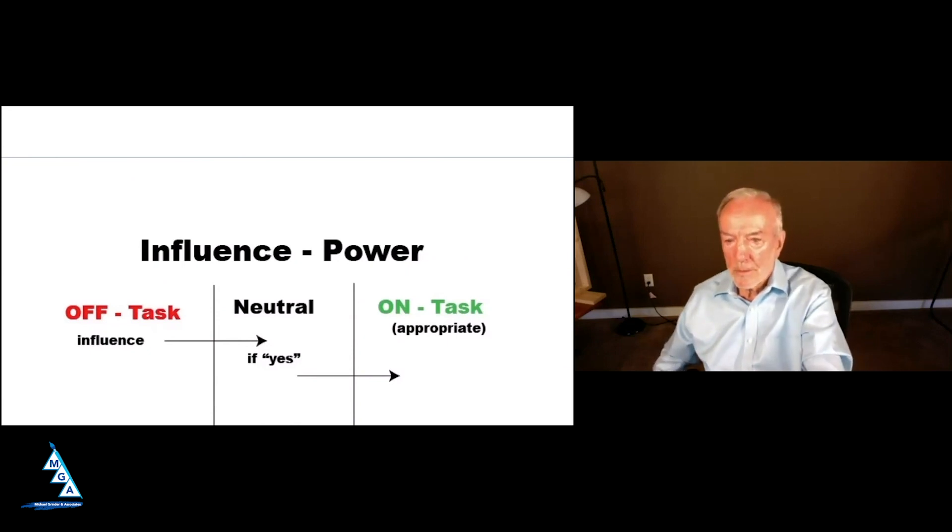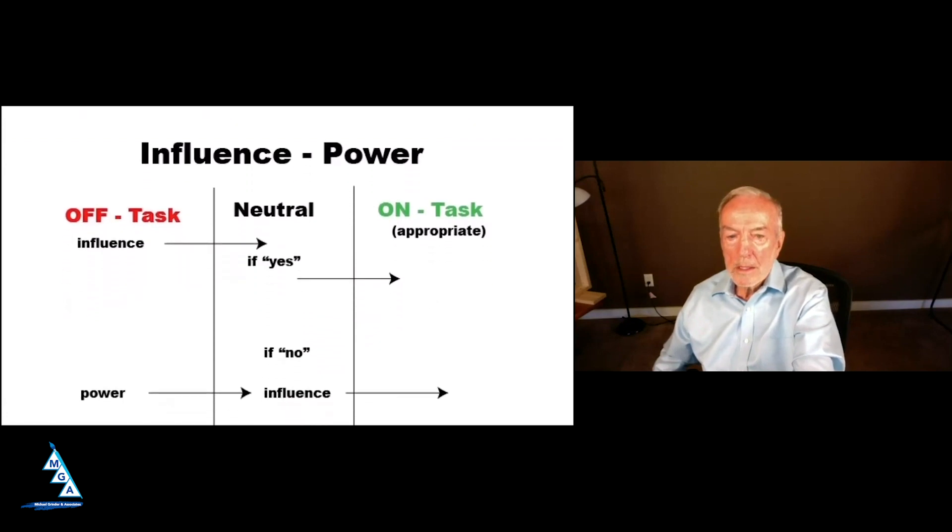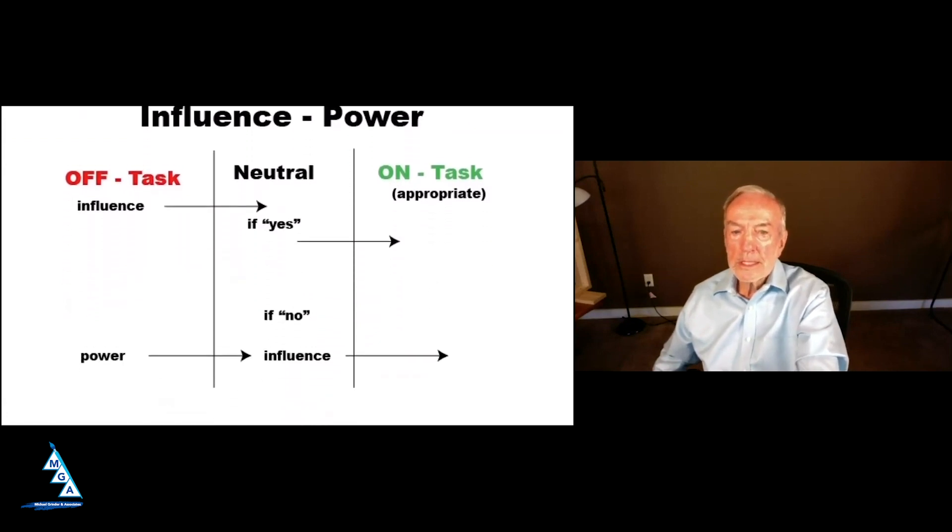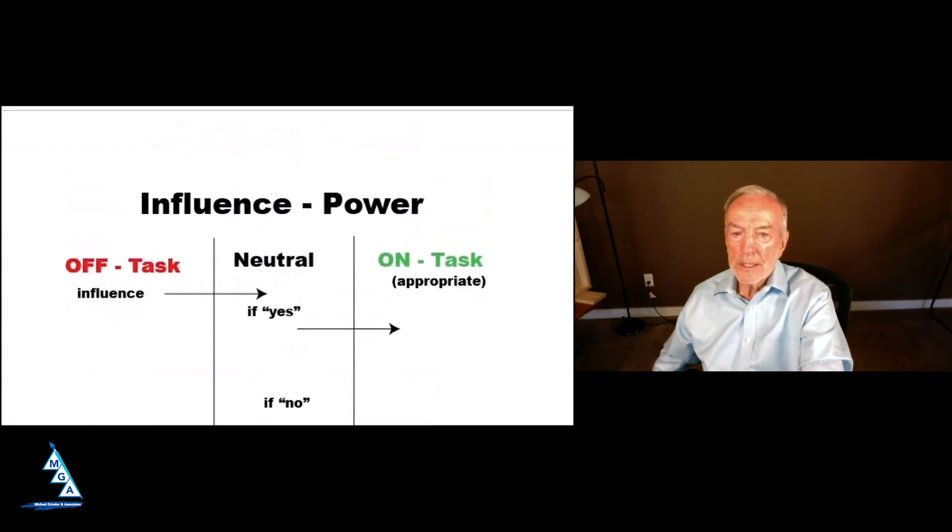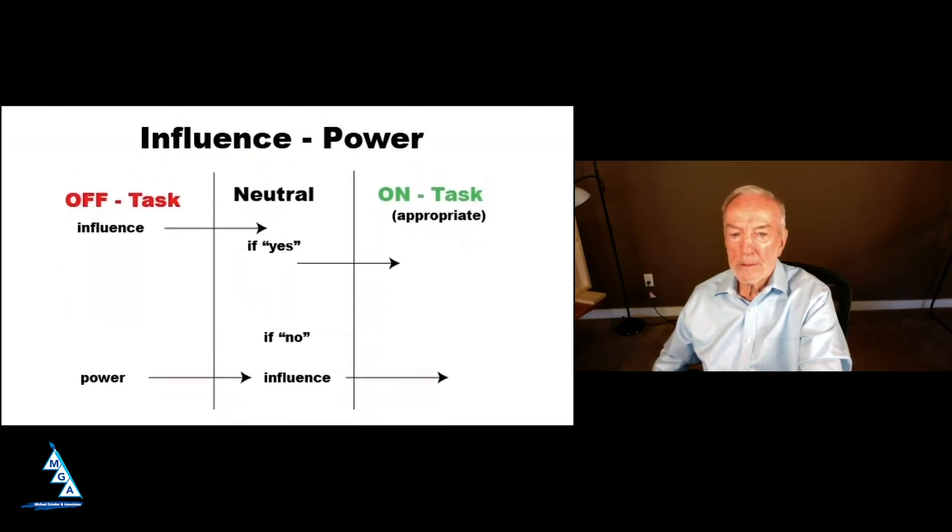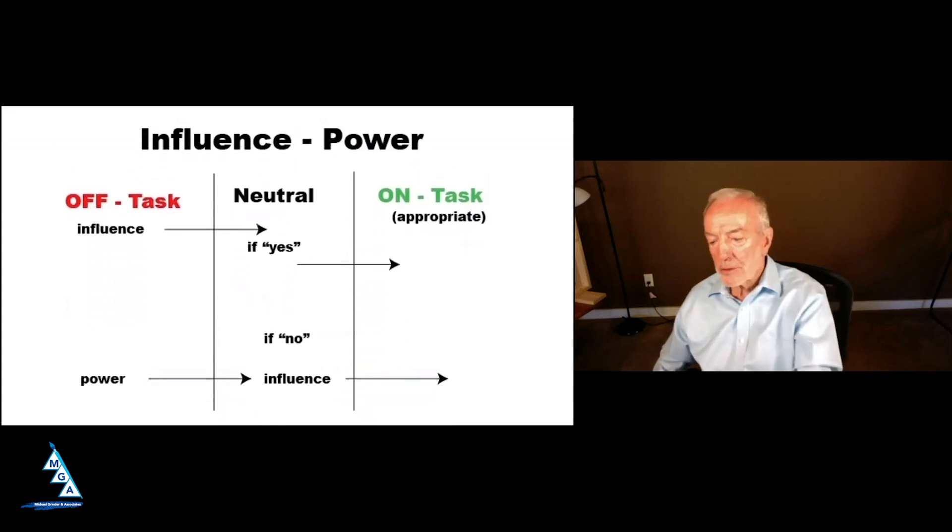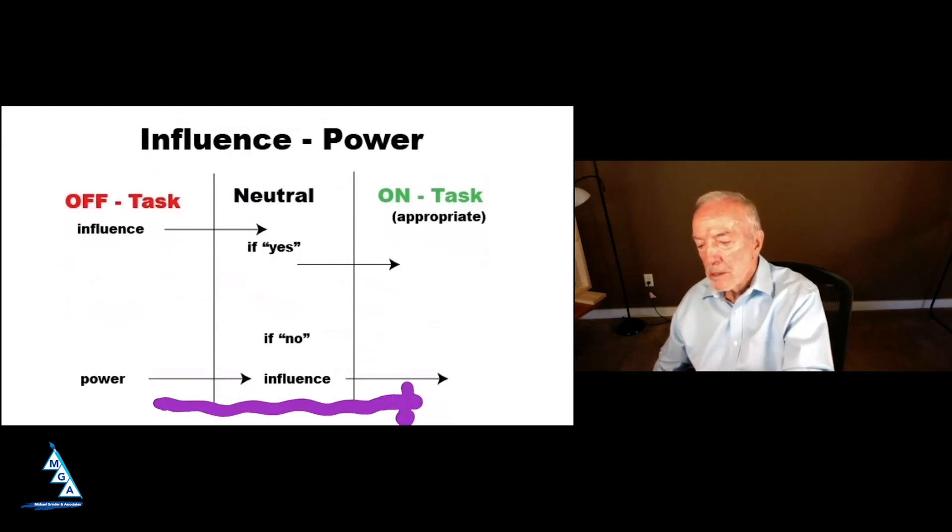But here's what's important. If you can't get someone using influence to get to neutral, you have to stop using influence. You have to use power. But what's critical is, notice, we do not take power and go all the way over. If you use power only to get to this, now you have to switch back to influence to get over to here.